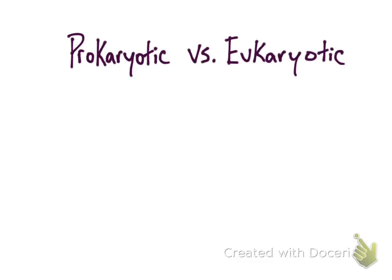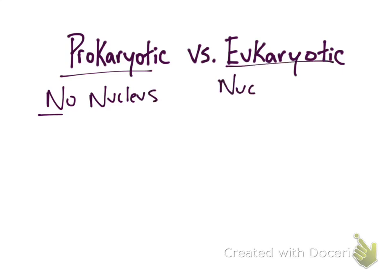So, prokaryotic versus eukaryotic. The first major difference between the two is that prokaryotic cells have no nucleus — they have no brain — while eukaryotic cells do have a nucleus. I found that pretty surprising when I learned about this. I always thought that all cells must have a nucleus, but that is obviously not the case. Prokaryotic cells do not need a nucleus.